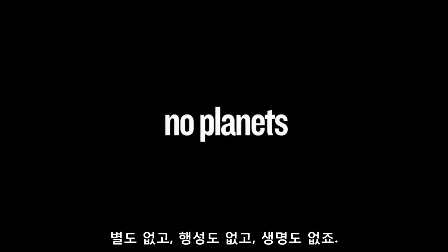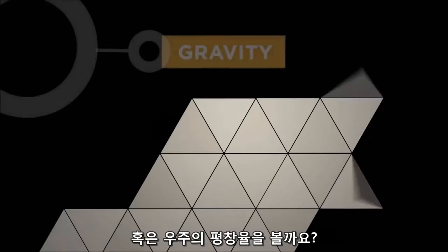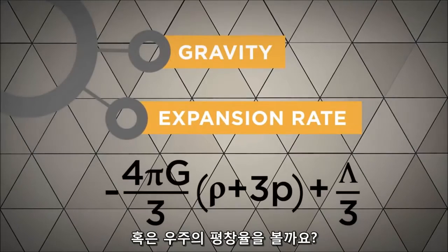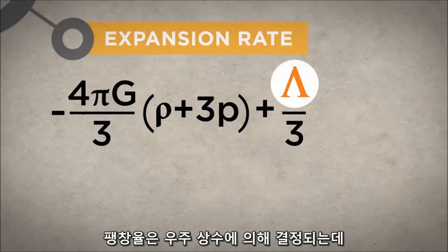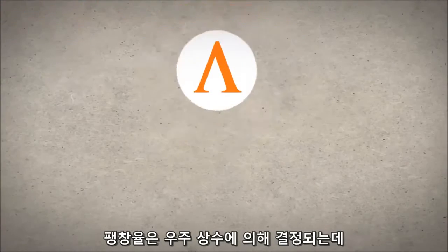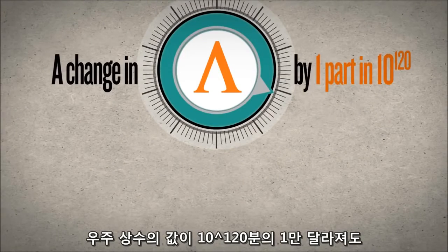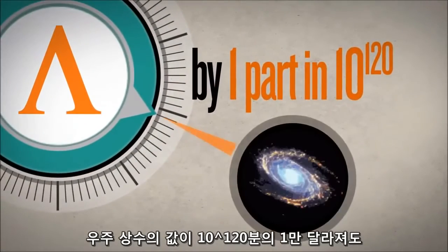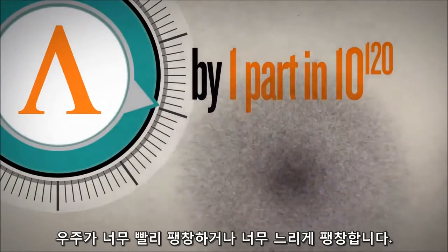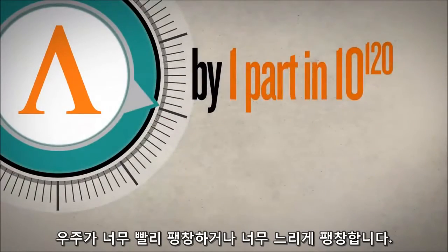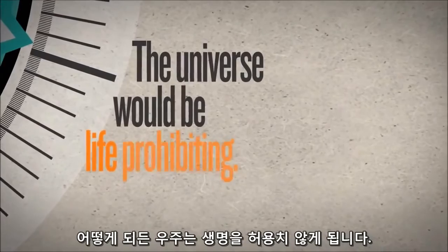No stars, no planets, and no life. Or consider the expansion rate of the universe. This is driven by the cosmological constant. A change in its value by a mere 1 part in 10 to the 120th parts would cause the universe to expand too rapidly, or too slowly. In either case, the universe would, again, be life prohibiting.